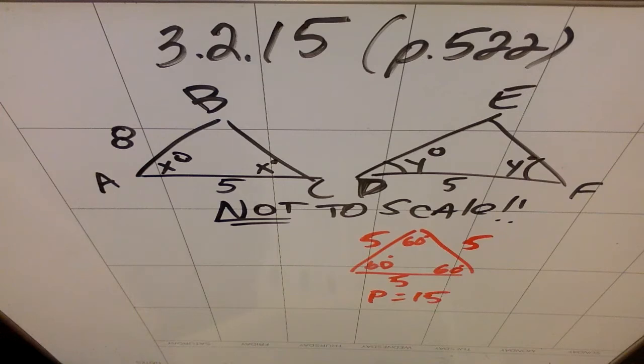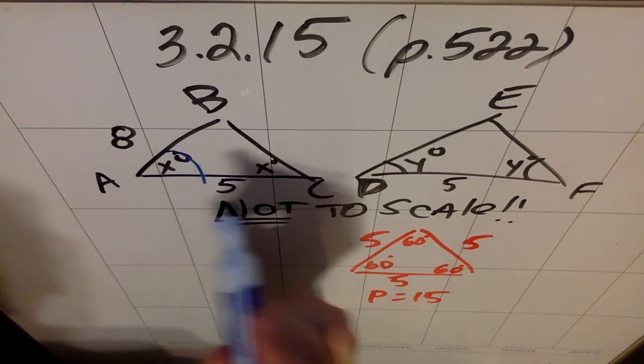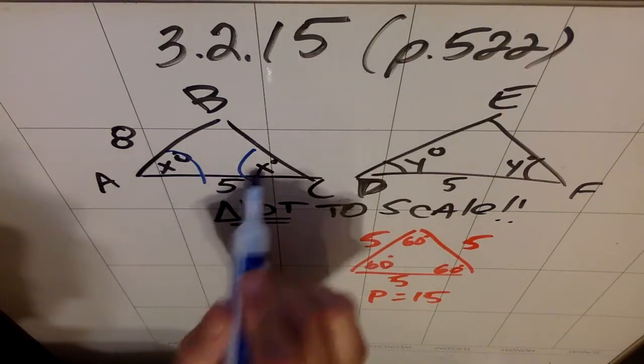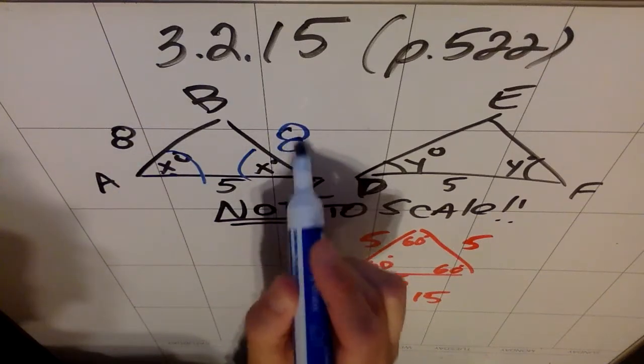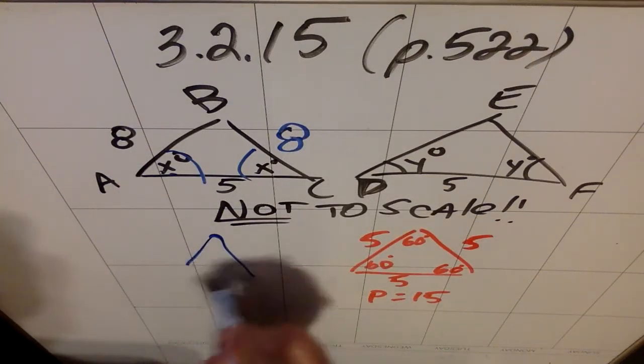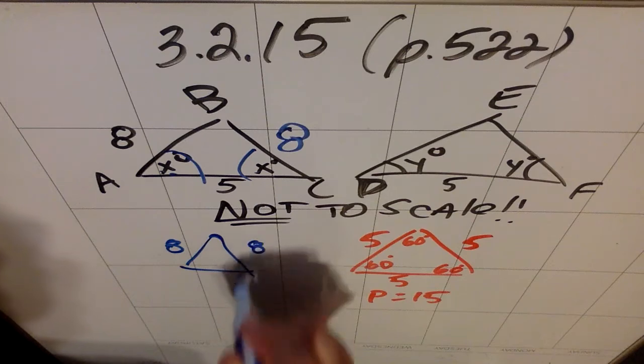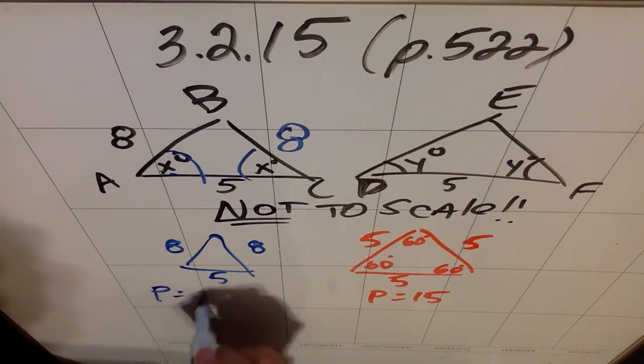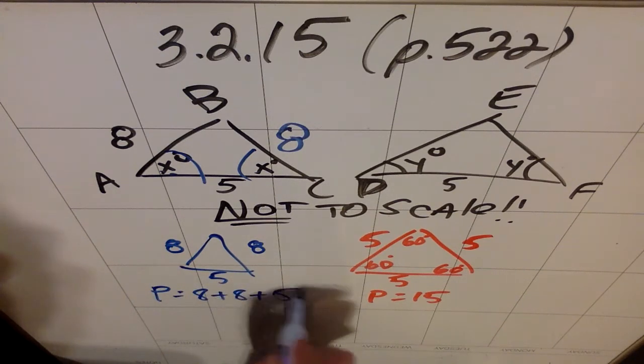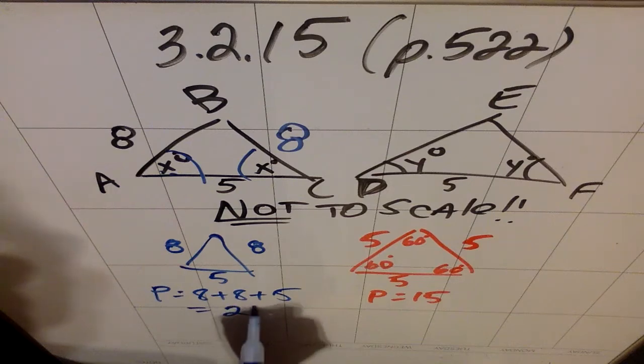But I don't know what X is. I know that X has to be the same as X. So if these two angles are the same, these two sides are the same, so that's an 8. So this guy is actually an 8, an 8, and a 5, which means his perimeter is 8 plus 8 plus 5, which is 21.